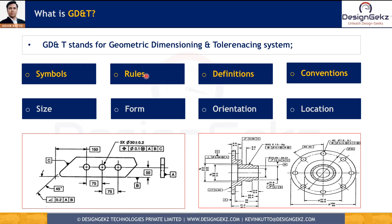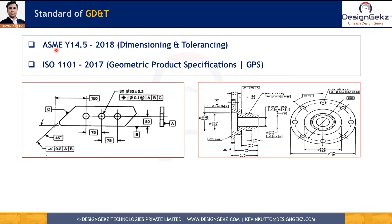GD&T has many symbols, rules, definitions of different terms, and conventions — meaning best practices used in engineering drawings to define size, form, orientation, and location of features or features of size. Two main popular standards are ASME Y14.5 2018, also called the Dimensioning and Tolerancing standard, and ISO 1101 2017, also known as GPS (Geometric Product Specification) standard. ASME stands for American Society of Mechanical Engineers; Y14.5 is the standard number; and 2018 indicates the latest revision was done in 2018.